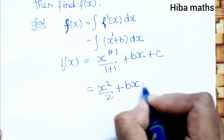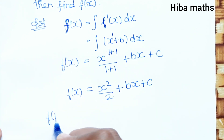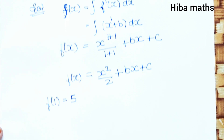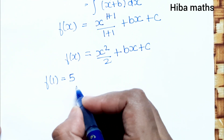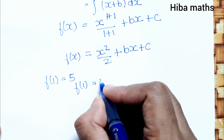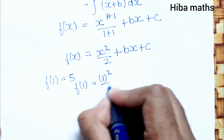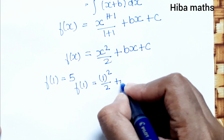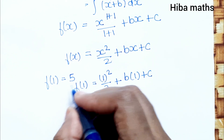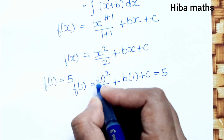So f(x) is equal to x squared over 2 plus bx plus c. Now applying the condition f(1) is equal to 5.